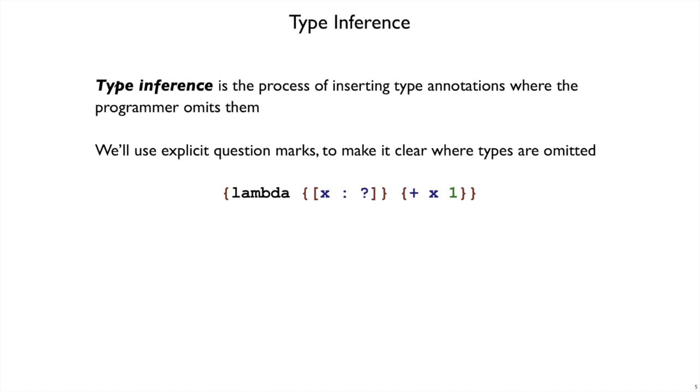This process of figuring out what the programmer should have written down when they leave out a type is called type inference.